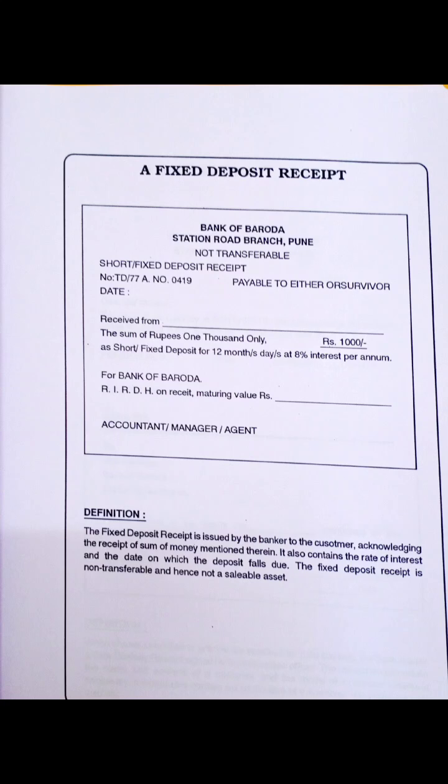Next is the fixed deposit receipt. Simply draw a box, then write the bank's name — in the given specimen it is Bank of Baroda — then the address, which is compulsory. Under the bank name comes the address — station road branch, Pune — then 'not transferable' and 'short or fixed deposit receipt,' which is compulsory. Then the date, 'received from — the sum of rupees one thousand only,' the amount in words and figures, 'as a short or fixed deposit for 12 months,' the date, 8% interest per annum, and 'for Bank of Baroda.' Also write the receipt maturity value of rupees — and the accountant and manager signatures.